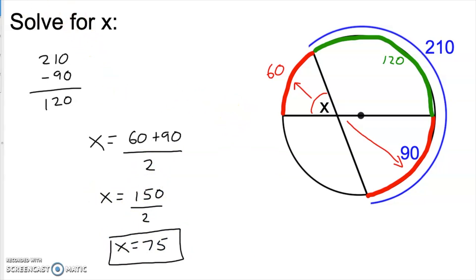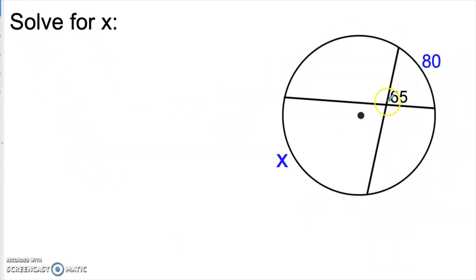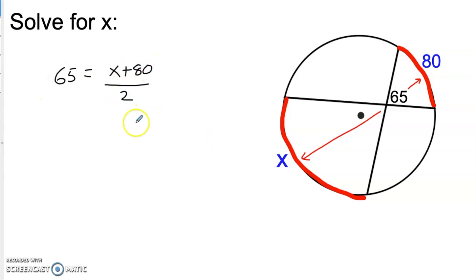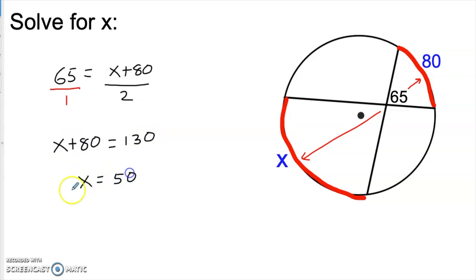What if they tell us the angle and want to know what one of the arcs is? In this picture we have a 65 degree angle formed by two intersecting chords, related to an 80 degree arc in the front and the unknown arc X in the back. We know that 65 equals X plus 80 divided by 2. One easy approach is to put 65 over 1 and cross multiply: X plus 80 equals 130, which means X is 50 degrees.